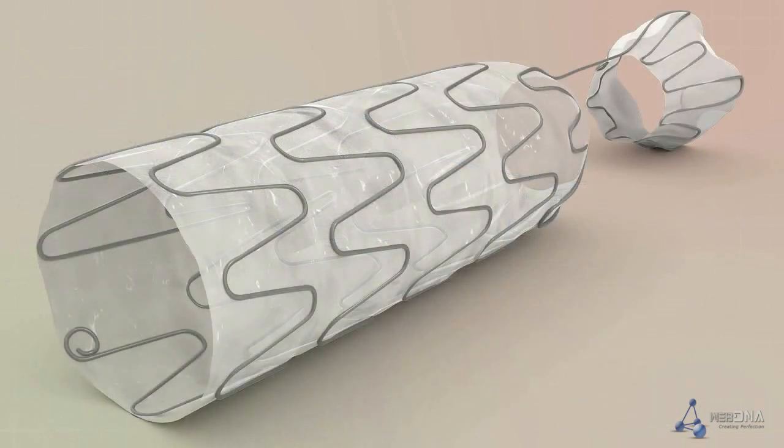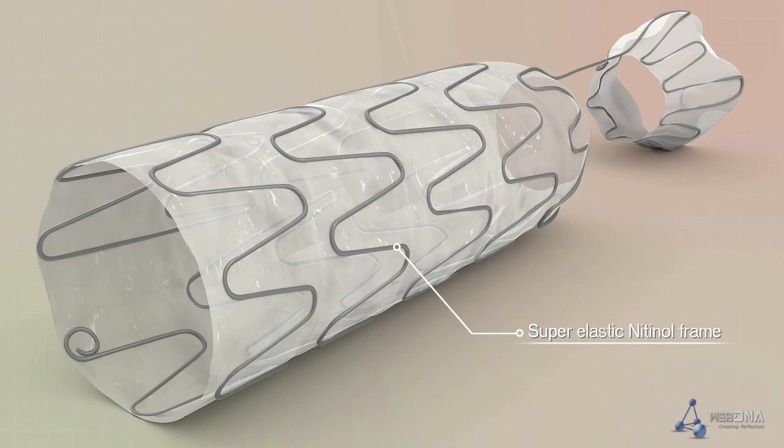Allium's proprietary polymer is embedded on the superelastic nitinol frame and is designed to prevent tissue ingrowth, calcification, and stone formation. This ensures that Allium stents can remain implanted for as long as required.